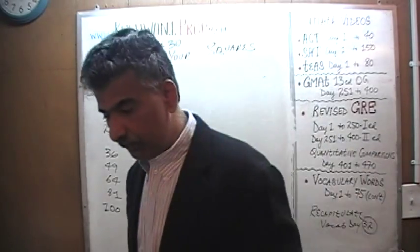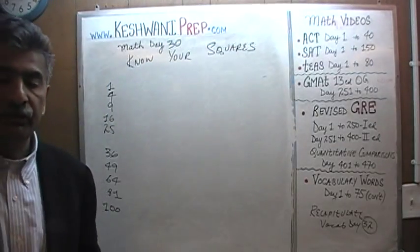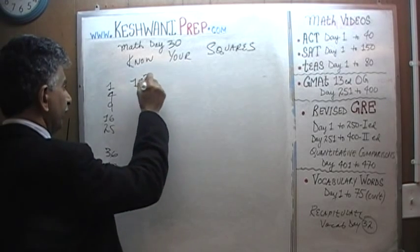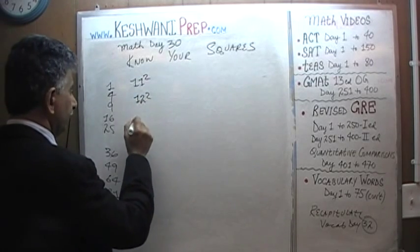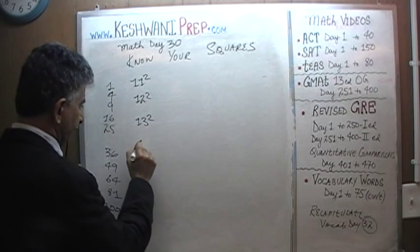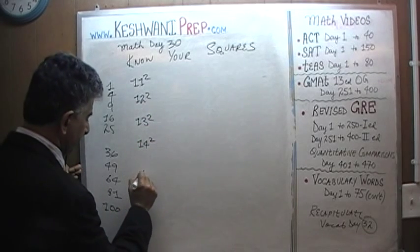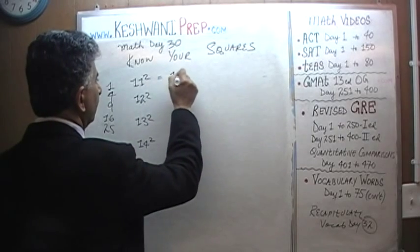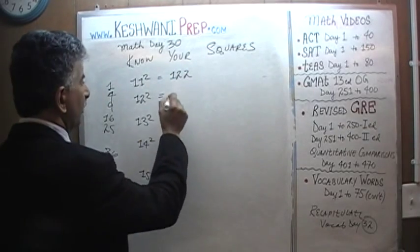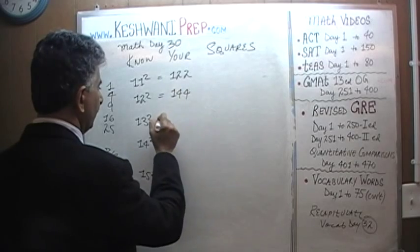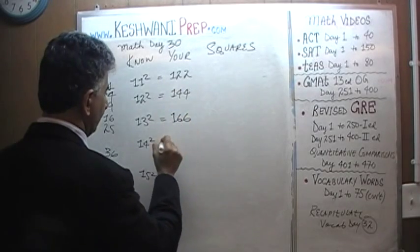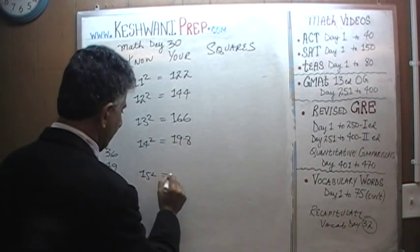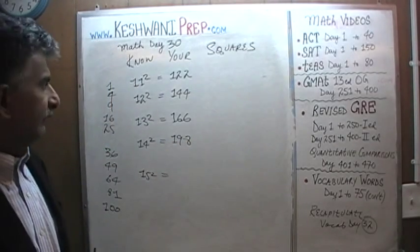What we are going to talk about right now are the squares of 11 through 20. Let's begin. 11 squared, 12 squared, 13 squared, 14 squared, 15 squared. 11 squared is going to be 122, 12 squared is 144, 13 squared is 166, 14 squared is 198, and 15 squared — we will talk about that in a second.